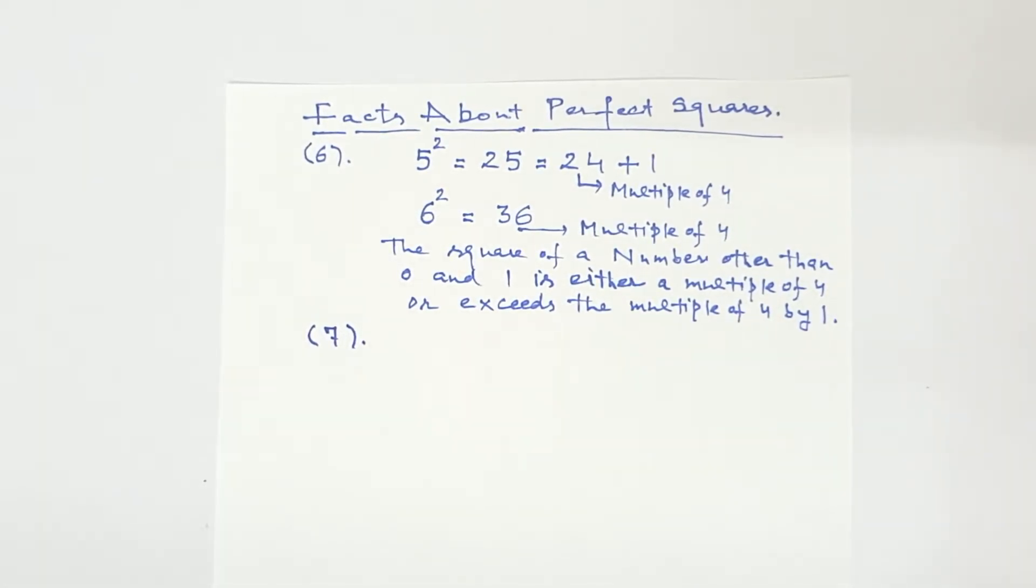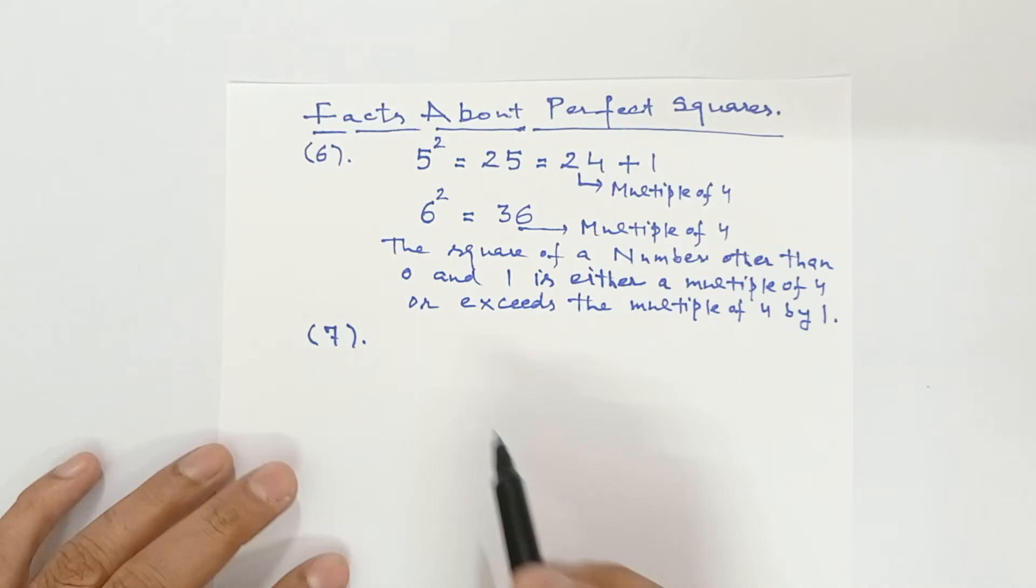The difference between squares of two consecutive natural numbers is equal to their sum. First of all you must know what are consecutive numbers. Consecutive numbers means two or three consecutive, or five or six consecutive, or seven or eight consecutive. So difference between squares of two consecutive numbers is equal to their sum. I will take two consecutive numbers, 6 and 7.